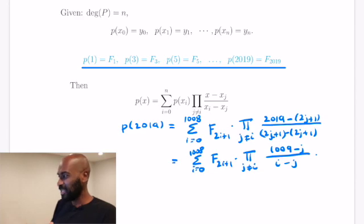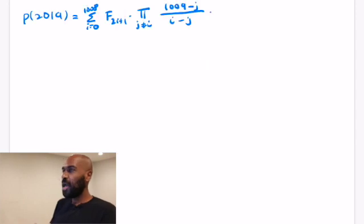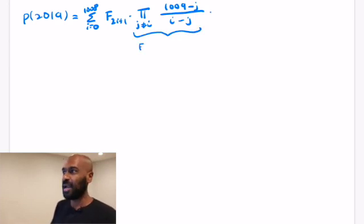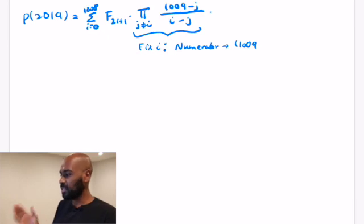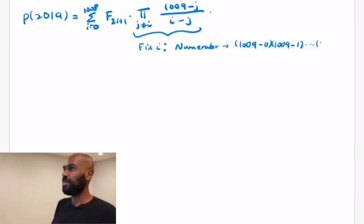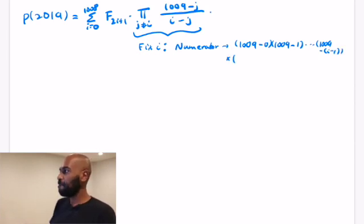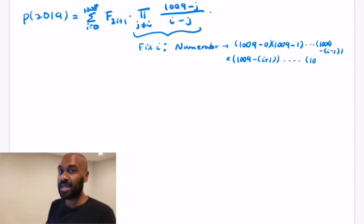There's a common factor of 2 in each fraction's numerator and denominator, so after simplification we get a sum from i equals 0 to 1008 of F sub (2i+1) times a product over j not equal to i of (1009 minus j) over (i minus j). This doesn't look immediately helpful, but picking things apart we can figure out what the entire expression is. We start by rewriting the product in a compact form — fixing an i and examining the numerator and denominator.